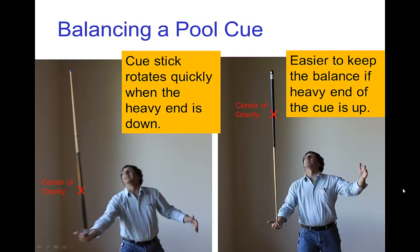If you want to balance an object like a pool cue on the palm of your hand, it's much easier if you have it with the heavy end up compared to the heavy end down. You might be surprised, but if you have something that is top heavy, being top heavy, the rotational inertia is larger.